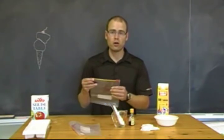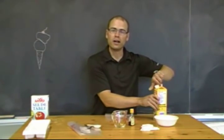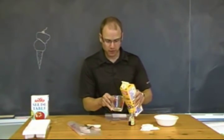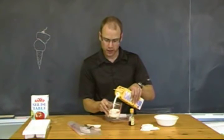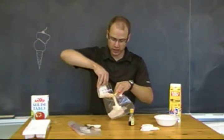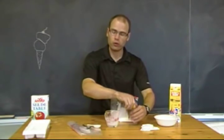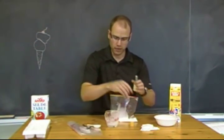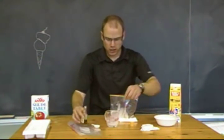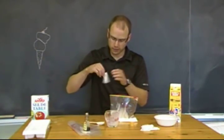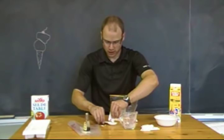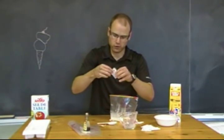Start with the small ziplock bag and put about a half cup of milk in it. This portion is about right for one person; if you want more, you can double the quantities. Then take about a half teaspoon of vanilla extract and add it to the bag, followed by about a half tablespoon of sugar — which is roughly three packets.